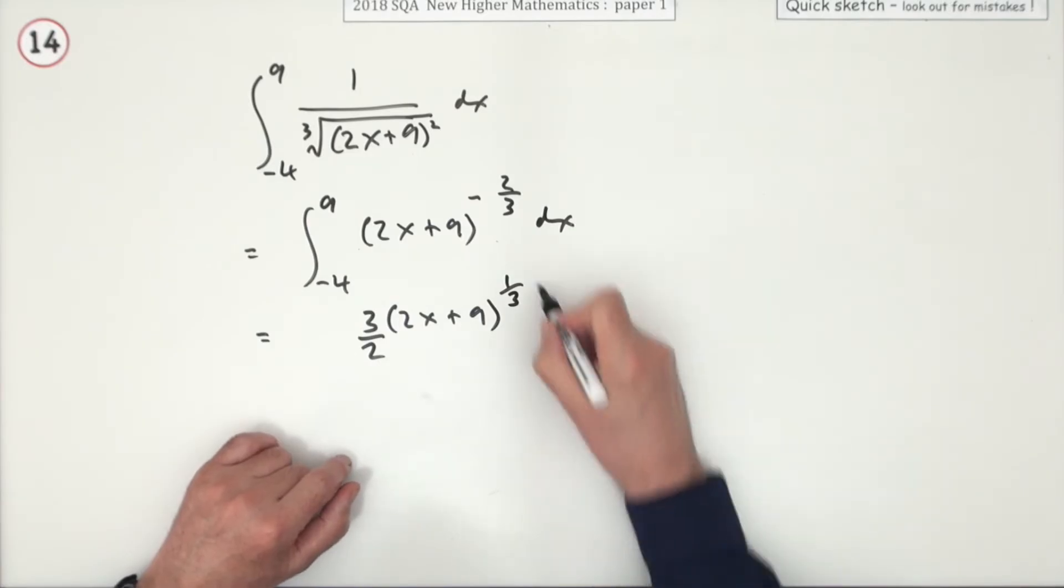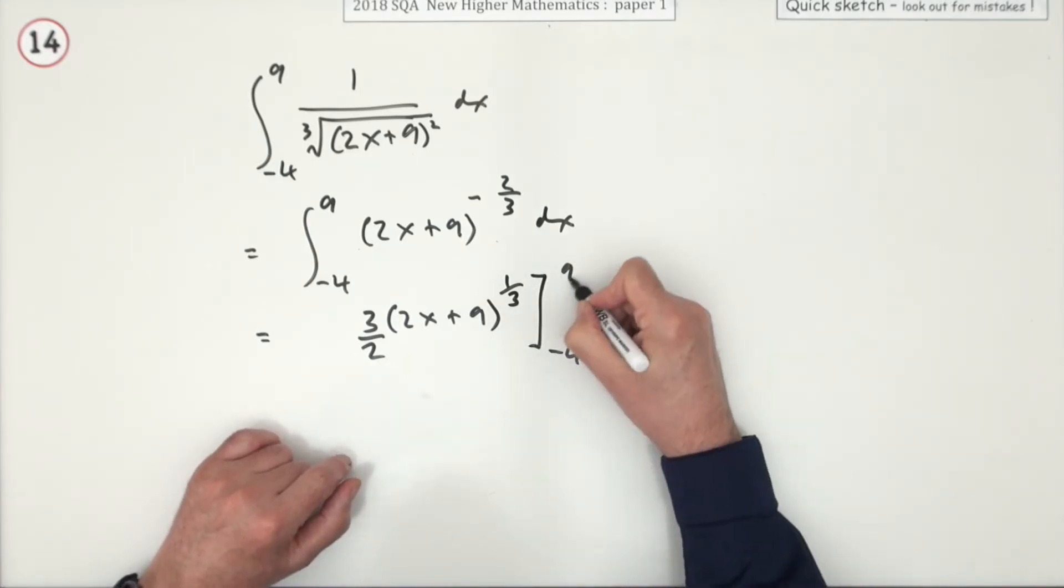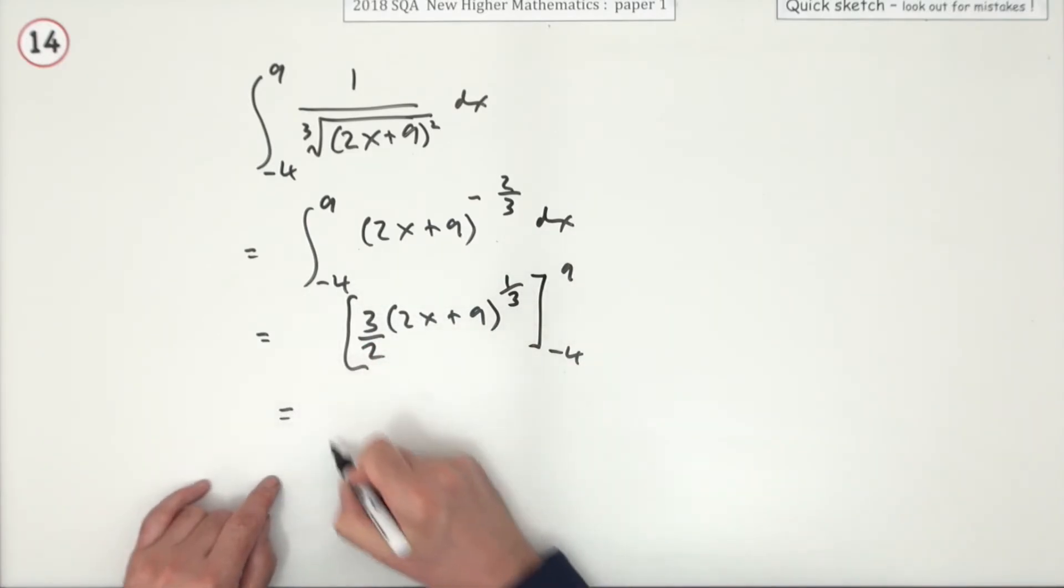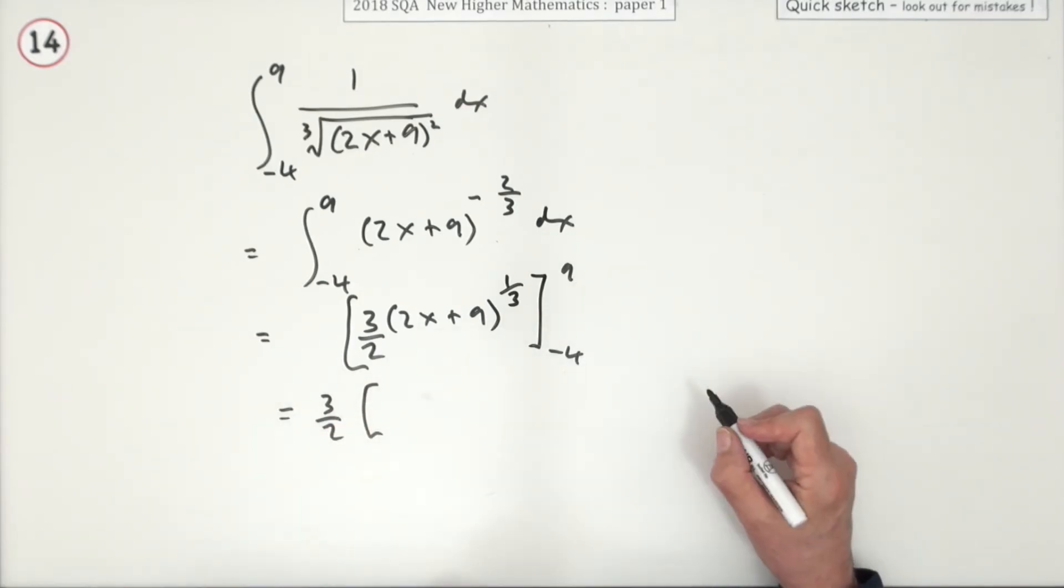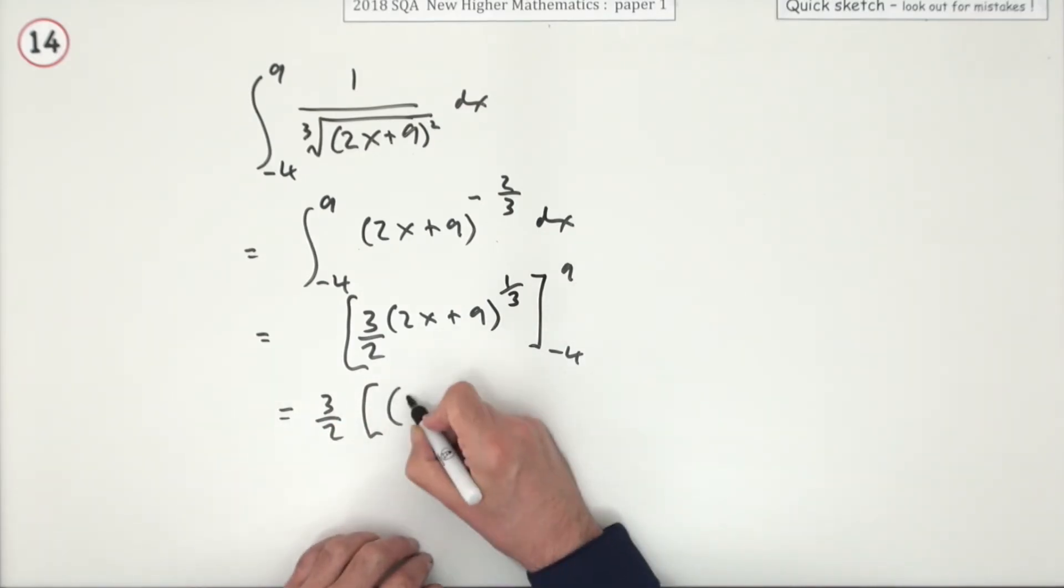So I've got that, evaluated from negative 4 to 9. Now I'm just going to take that 3 upon 2 out because that's a common factor. And just say, now I work it out at 9 and I work it out at negative 4. I'll put the working down.